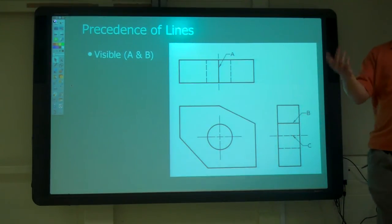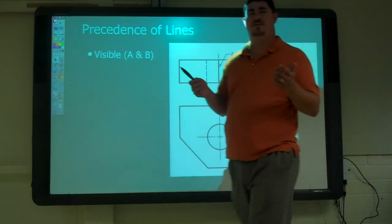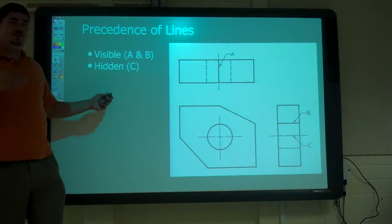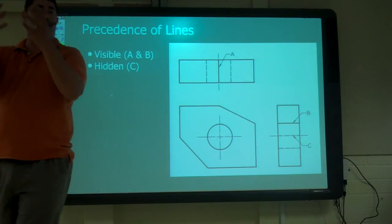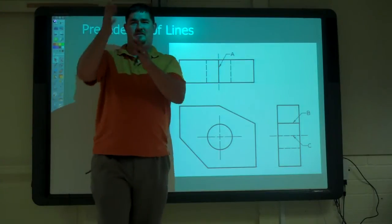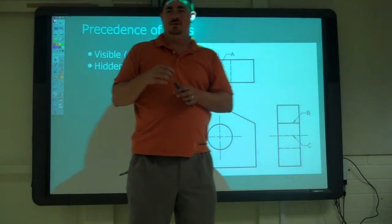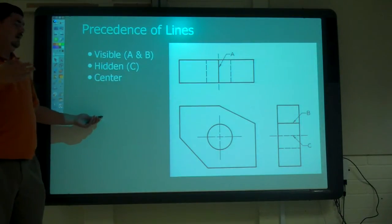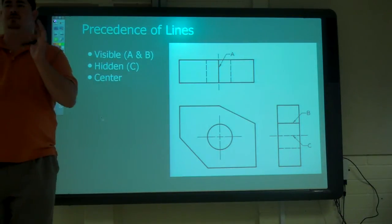Then what's second most important? Hidden or center? Hidden. Hidden is our second most. Because you don't want to see, because that's an actual piece of the part. So it's more important than just a theoretical center of something. So visible, then hidden, and then the center lines to kind of clarify some stuff.